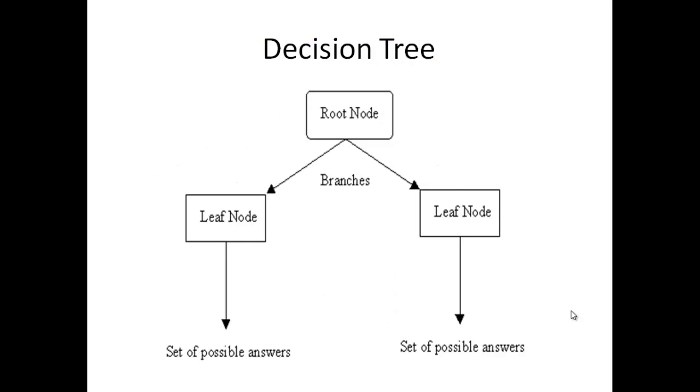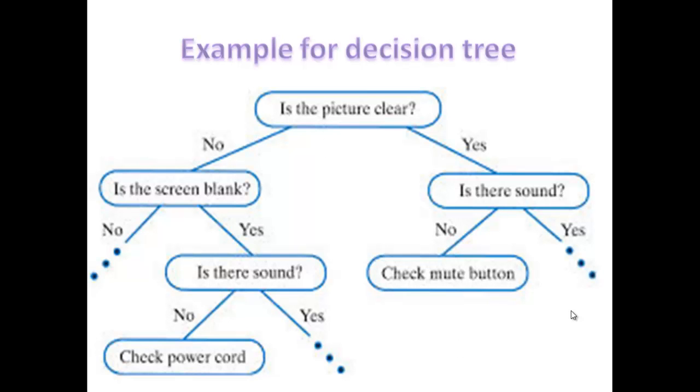This picture shows a decision tree with yes-no questions that diagnose a problem. The question is placed in the root node, and based on the user's answer, a conclusion is found in the leaf node.